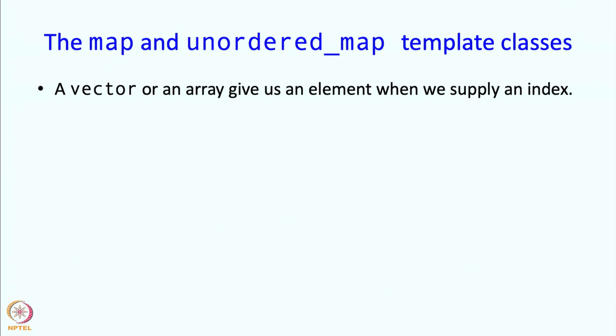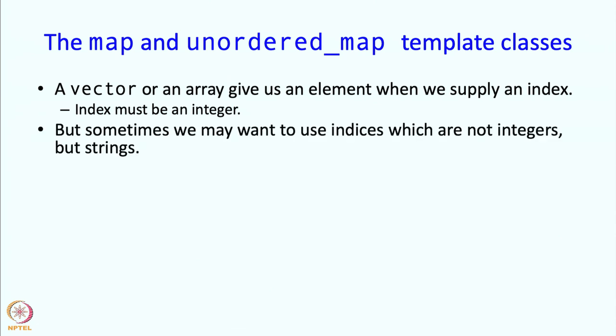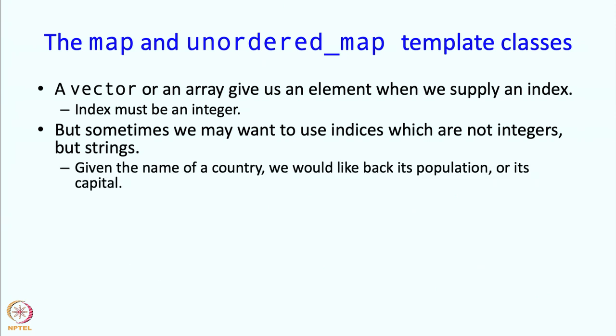Let me describe them starting with vectors. A vector or an array gives us an element when we supply an index. The index must be an integer and it must come from a small range. But sometimes we may want to use indices which are not integers but maybe strings. For example, given the name of a country, we might want to use it as an index and get back its population or its capital.